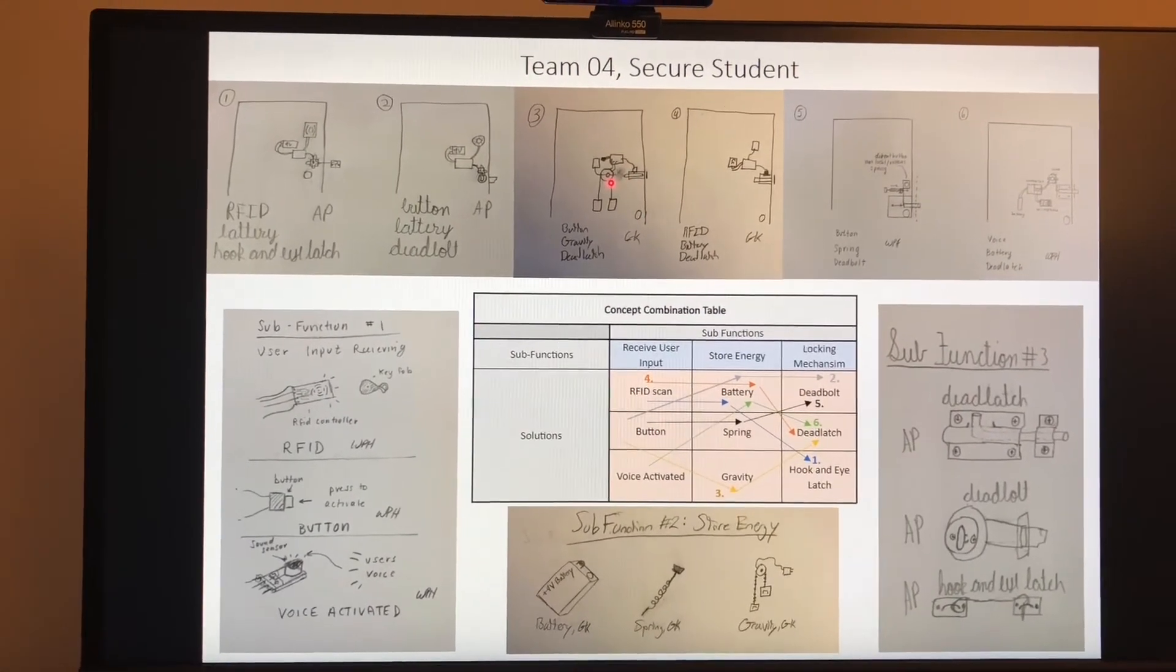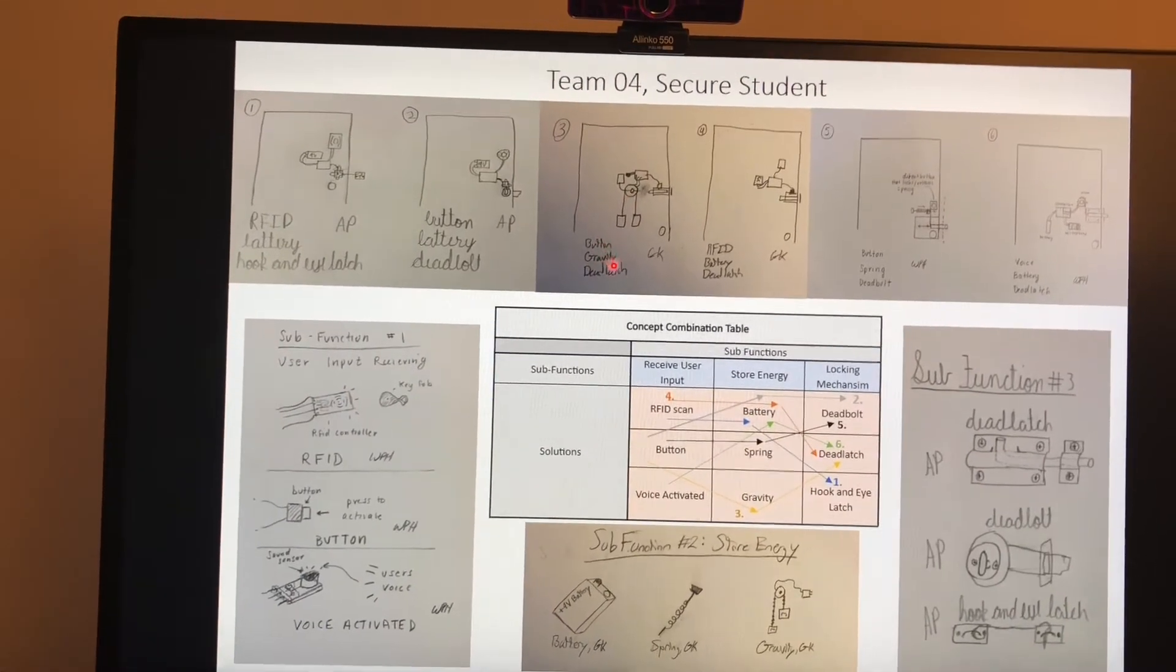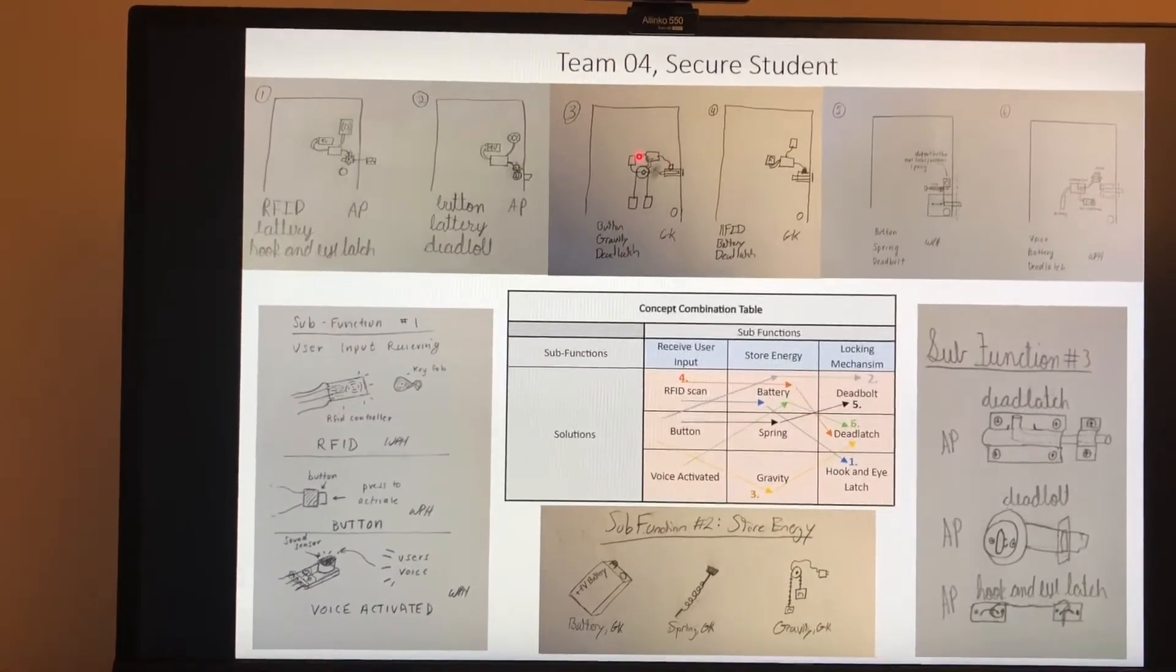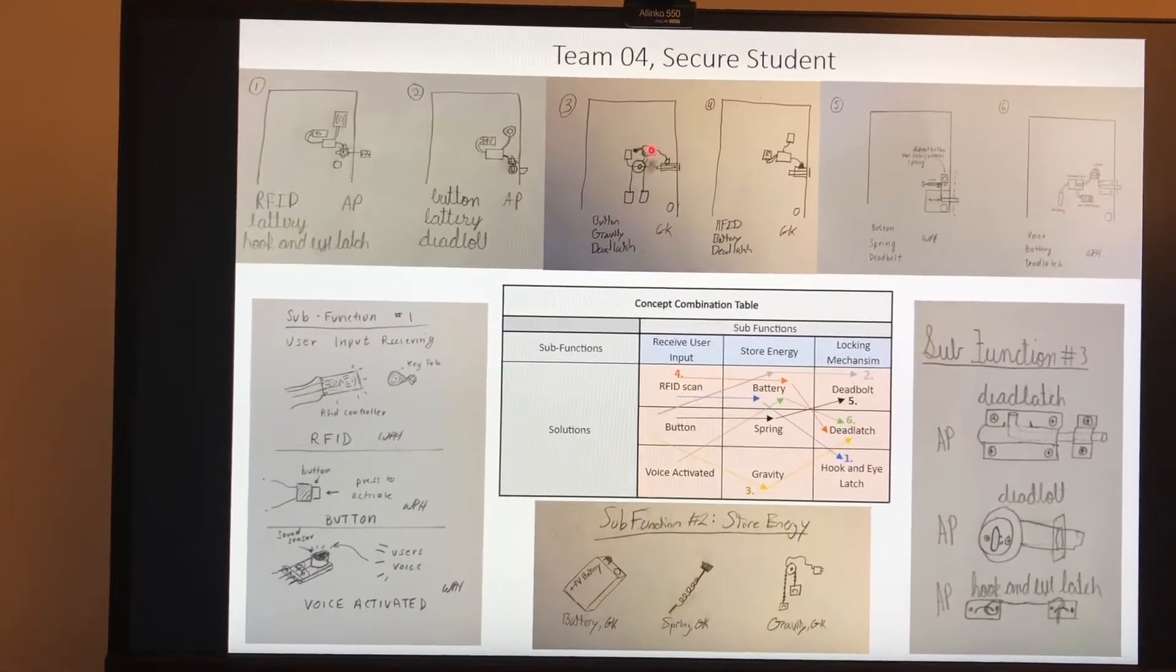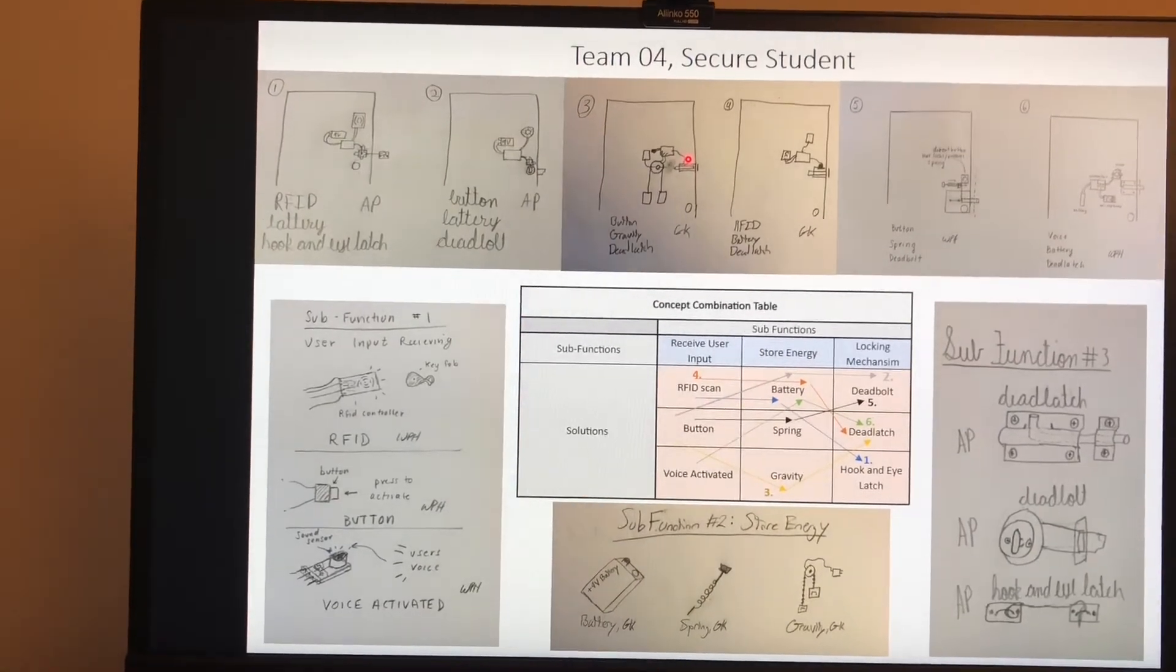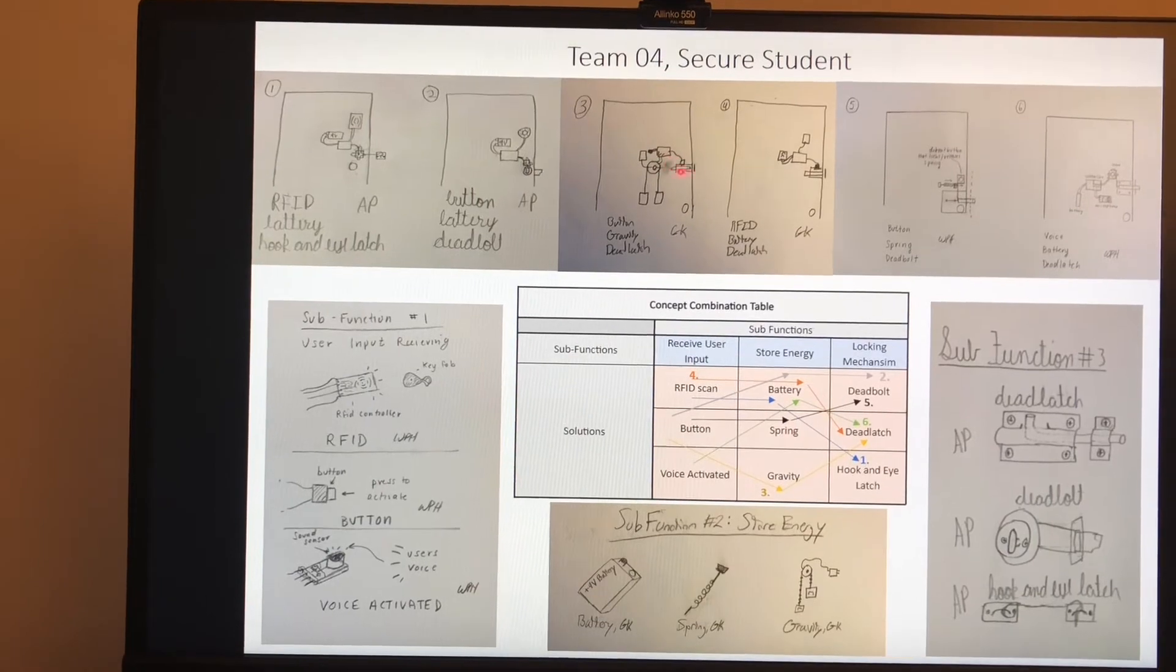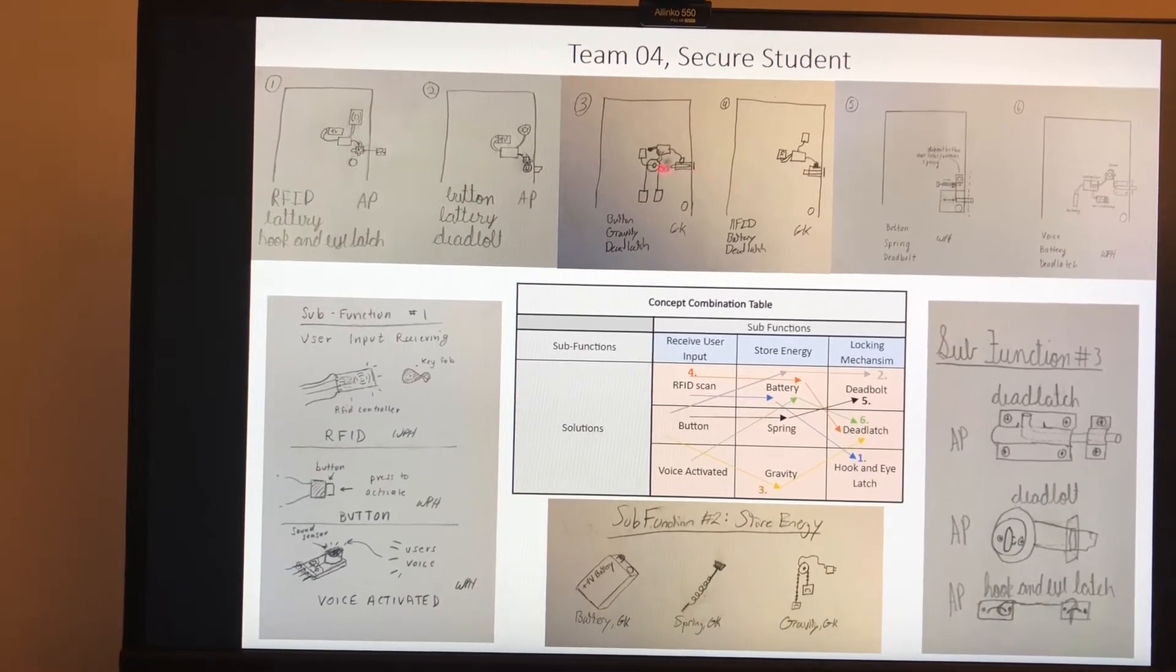To go into a little bit more depth about those, number 3, for the button, gravity, and deadlatch, the user would push the button when they got up to the door, it would send some code to Arduino, and it would send that to the motor, and it would end up turning the rotational motion from the motor into horizontal motion to open the deadlatch.